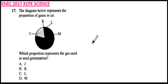Number 17. The diagram below represents the proportion of gases in air. We have J, K, L, M, which proportionally represent the gases. Which proportion represents the gas used in seed germination? The gas that is required in seed germination is oxygen.